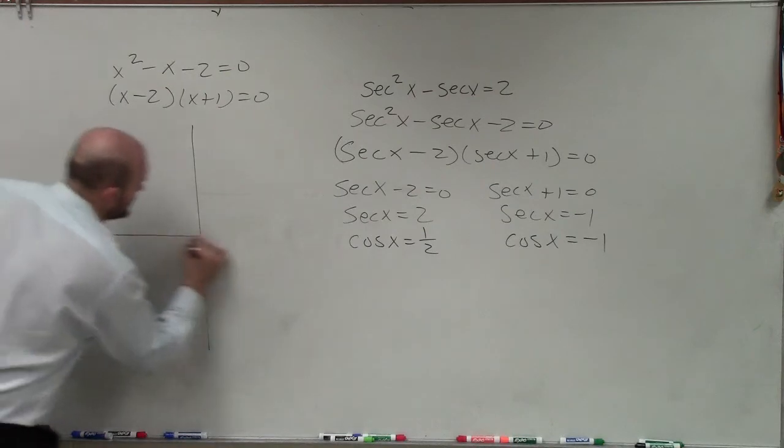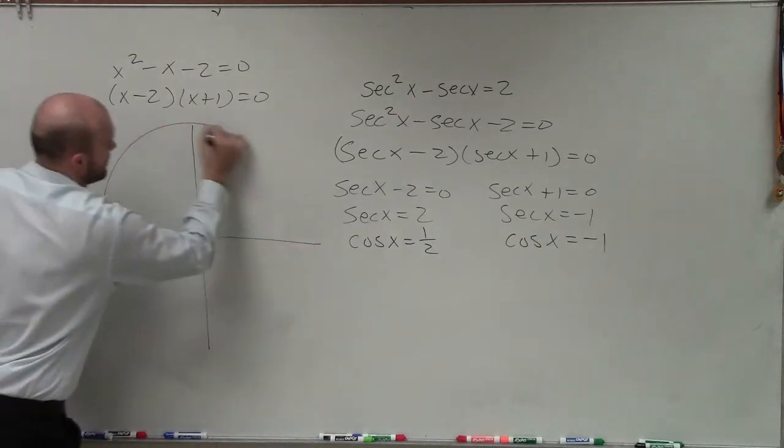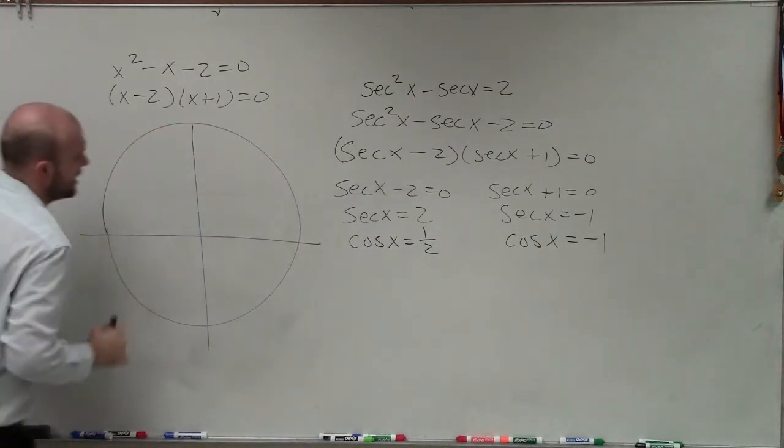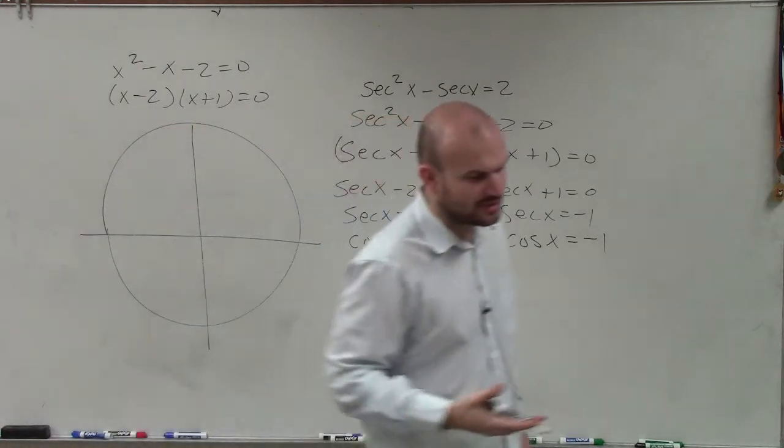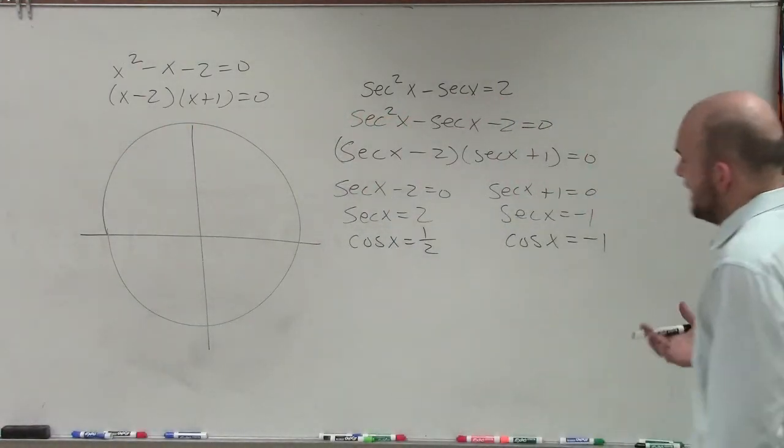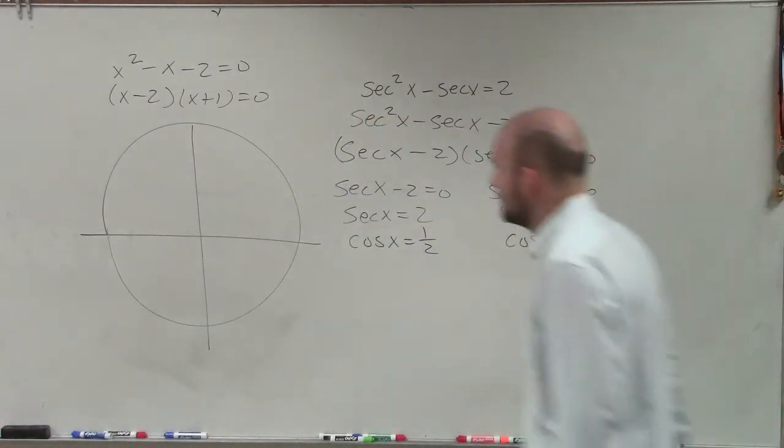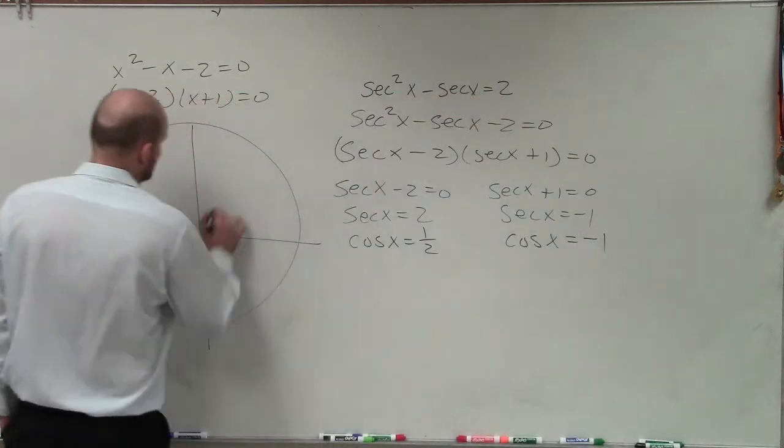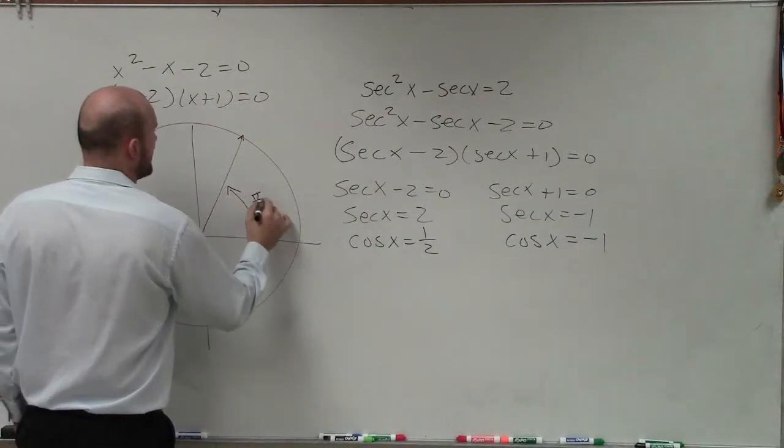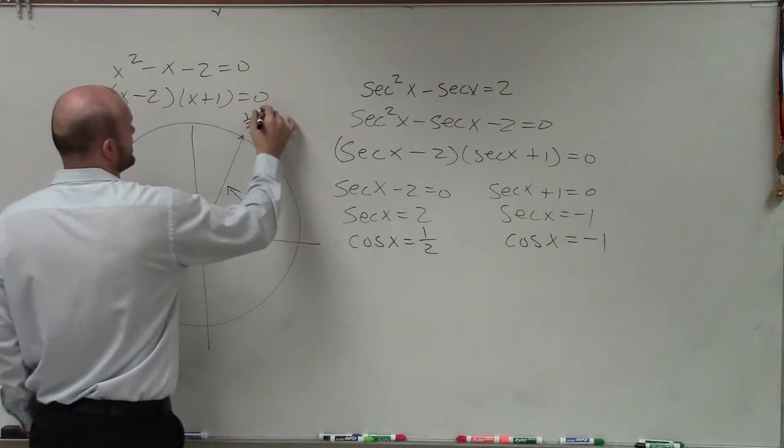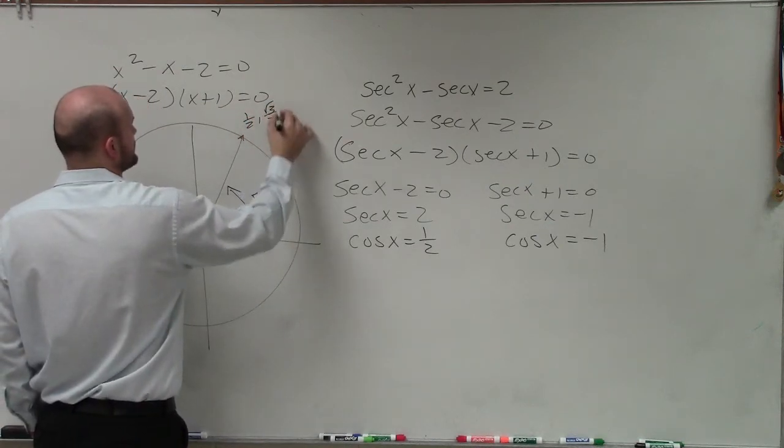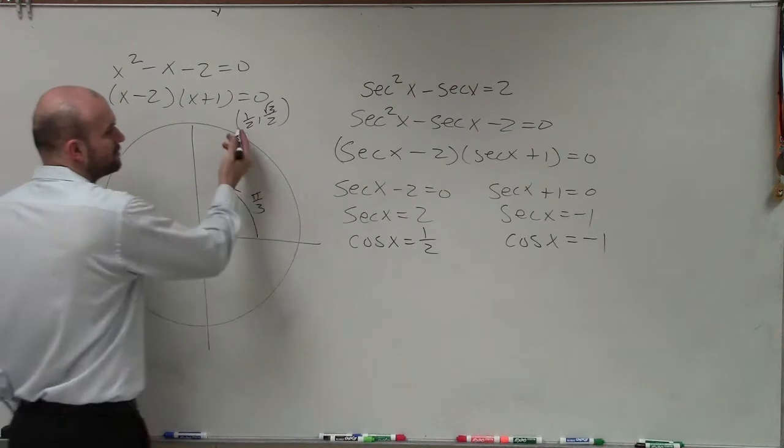So I go back to my unit circle and I say, when are my values going to equal 1 half and going to equal negative 1? Well, by looking at my points here, I know that this first angle, pi thirds, that point is 1 half comma square root of 3 over 2.